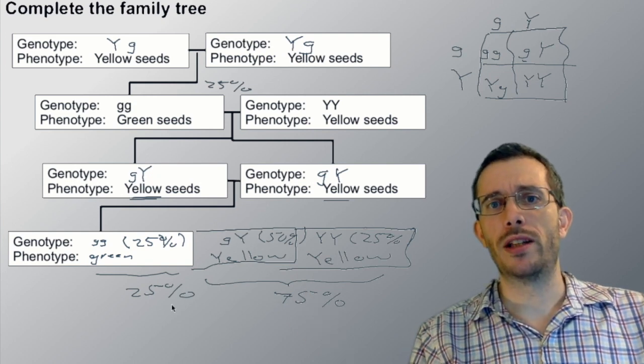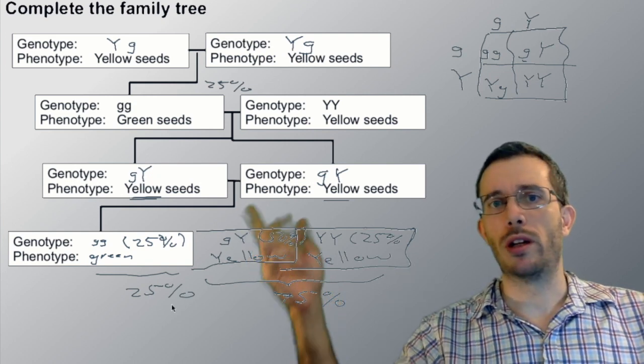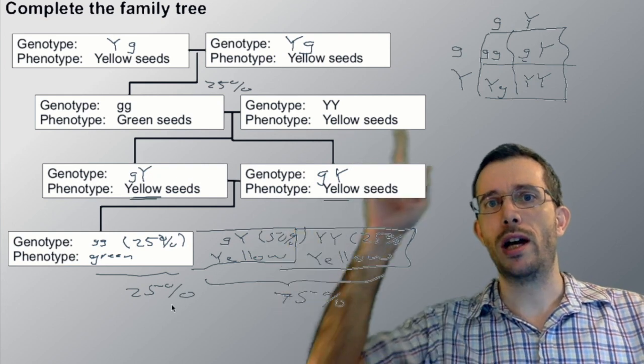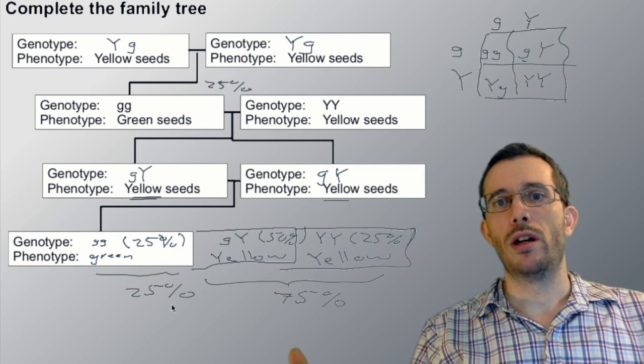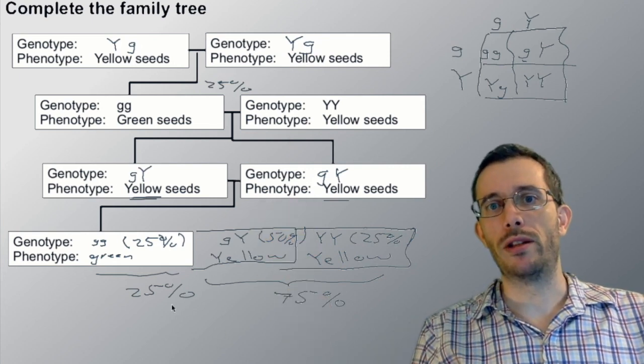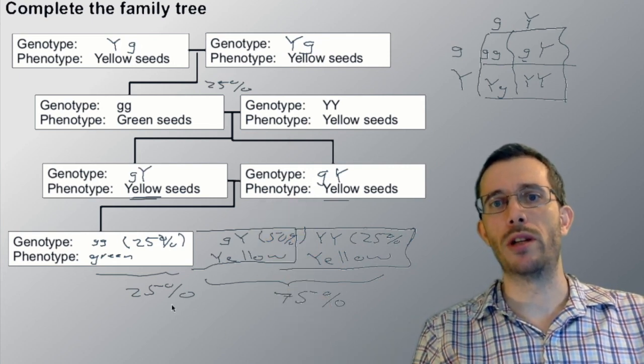So this is a very simplified example of how we can use combinations and the Punnett square to figure out the family tree of some inheritance of some recessive and dominant traits.